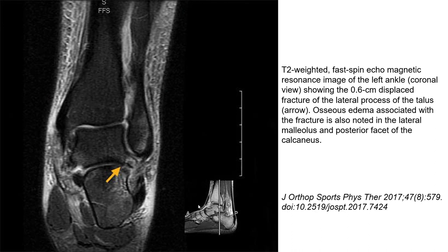Same case, another cross-section. This is the T2 image showing the displaced fracture of the lateral process of the talus, indicated by the arrow. A T2 image also demonstrates osseous edema in the region.